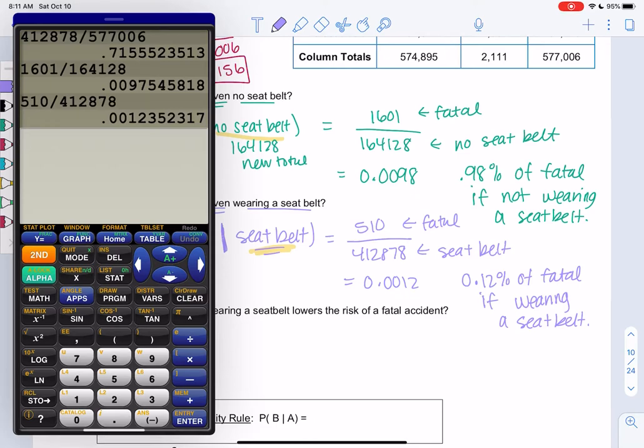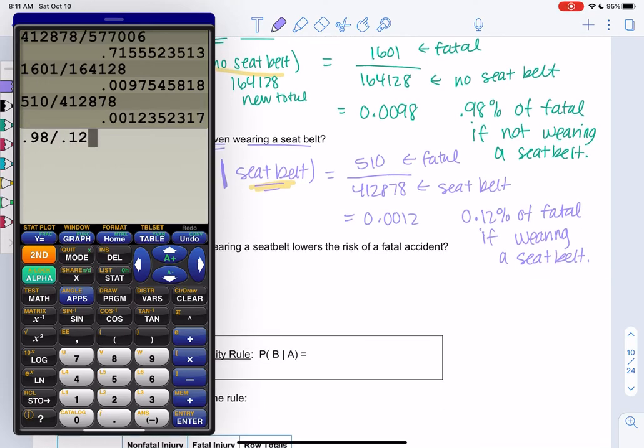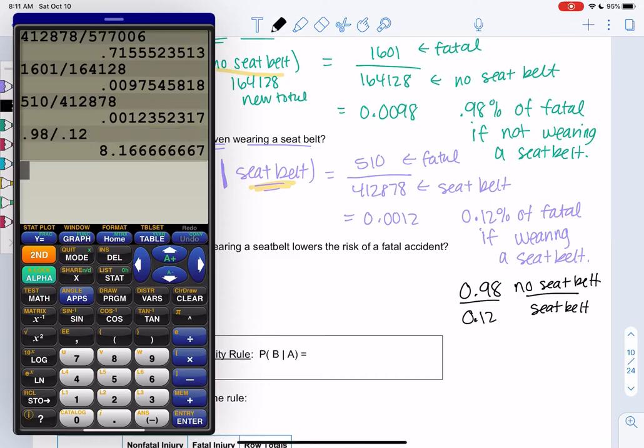It's definitely a smaller chance. One thing we often do is we divide. If we do 0.98, this is called a ratio, which shows us the ratio of the risk, how much more times risky it is. So if we do 0.98 divided by 0.12, this is no seatbelt compared to seatbelt. It's actually more than, it's like eight times riskier with no seatbelt.